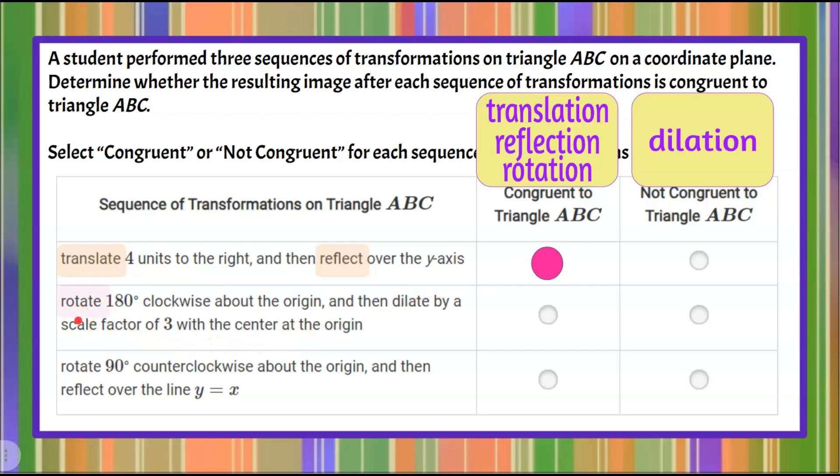Second, they rotate about the origin and then they dilate with a scale factor. So because they're rotating, no change in size, dilation is going to be a change in size. Here, it's increasing. The scale factor is greater than one. So it will be an enlargement, which we didn't need to know. We just know that if it's a dilation, it's not going to be congruent. There's been a change in size.